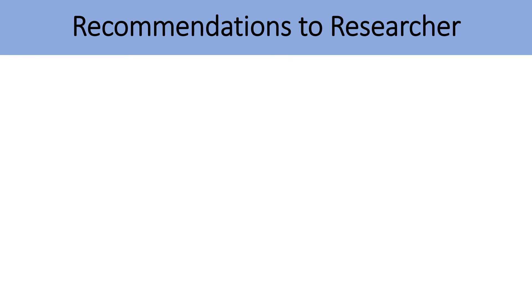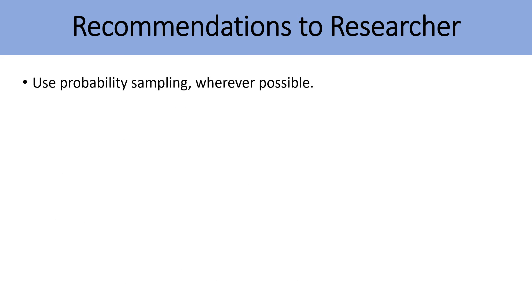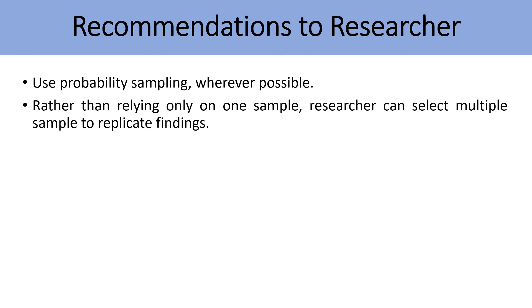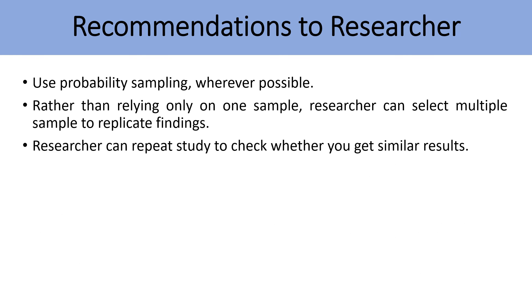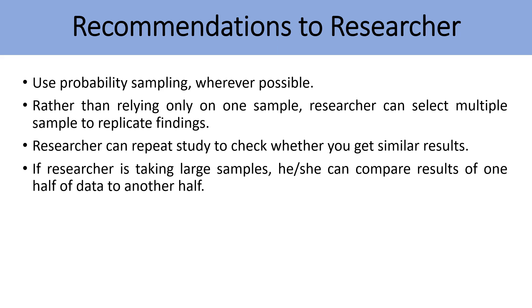As mentioned earlier, convenience sampling is not used for the convenience of the researcher. The first recommendation for researchers is to use probability sampling wherever possible. Even if a researcher uses convenience sampling, rather than relying on only one sample, the researcher can select multiple samples to replicate findings and repeat the study to check whether similar results are obtained. If the researcher is taking large samples, they can compare results of one half of the data to the other half.